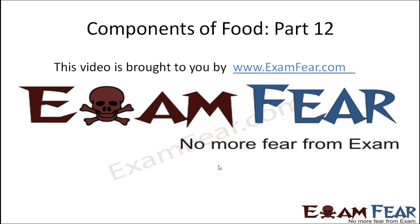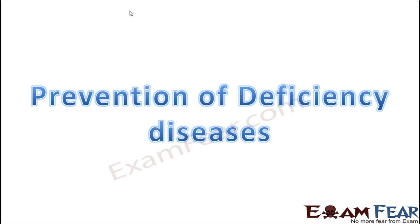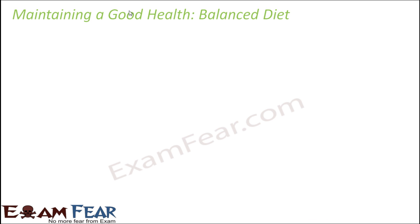This video on components of food is brought to you by examfew.com. The question is: how can we prevent deficiency diseases? Why do we get these deficiency diseases? It happens due to deficiency of nutrients in our food. If we can ensure that the intake of food is proper, we should be able to prevent deficiency diseases.